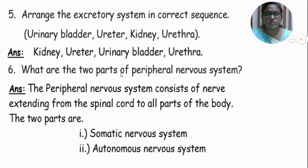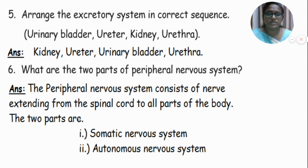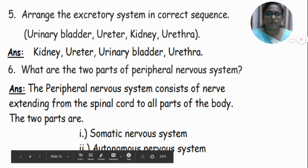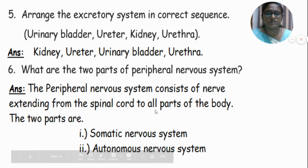What are the two parts of the peripheral nervous system? The peripheral nervous system consists of nerves extending from the spinal cord to all parts of the body. The two parts are the somatic nervous system and the autonomous nervous system.